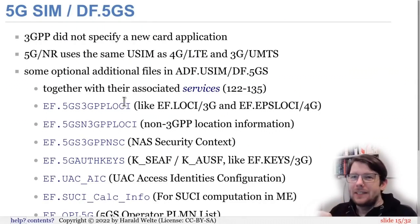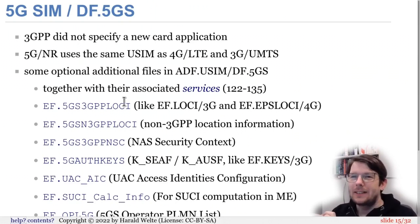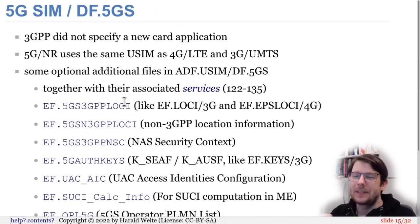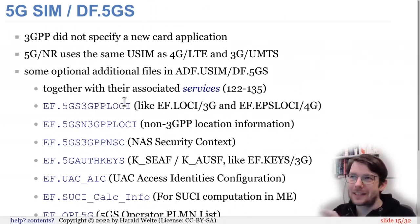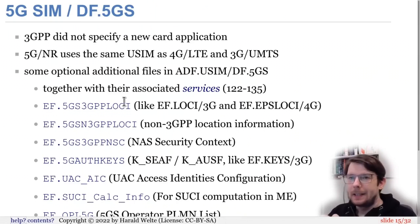BER-TLV as an encoding has been around in ISO 7816 for a long time — file control parameters and many transparent files already use BER-TLV encoding. What's new is having BER-TLV as a distinct file *type* with structured access in 3GPP context, which is a more recent addition.